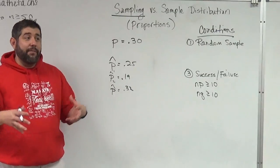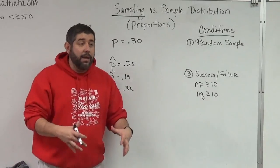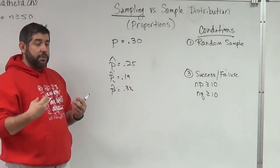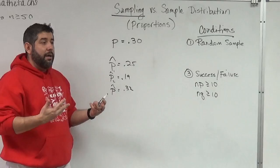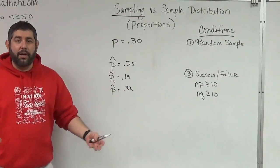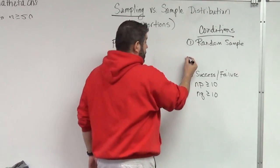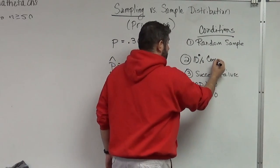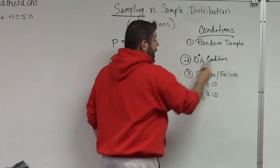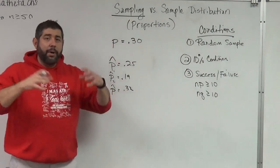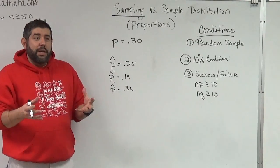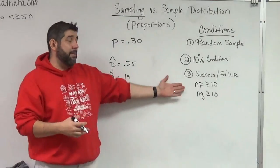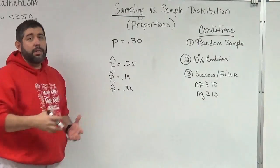I also don't want too big of a sample size, because if I have too big a sample size, then the sample I take out of the population is no longer independent when I pull these people out — I'm taking too much of the population. So to do a sampling distribution, we have our second condition, which is the 10% condition. My sample needs to be less than 10% of the population.